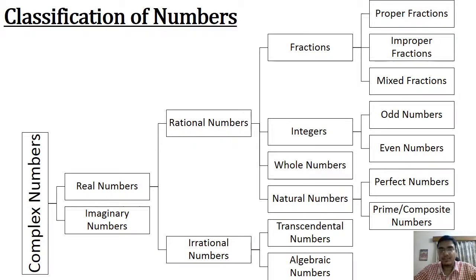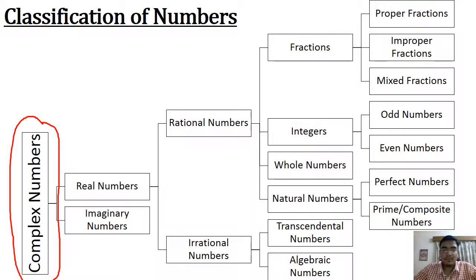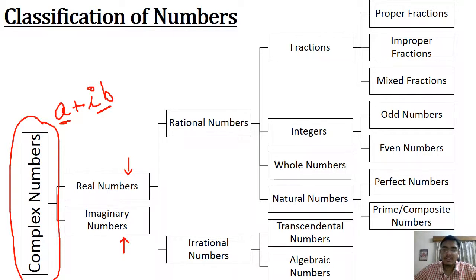Before proceeding any further, let us first have a look at how numbers are classified. The largest set of numbers is complex numbers, represented in the form A plus iota B, where this is the real part and this is the imaginary part. The second largest set is real numbers and imaginary numbers. In real numbers, we again have two types: rational and irrational.